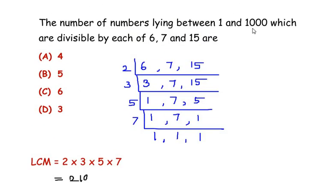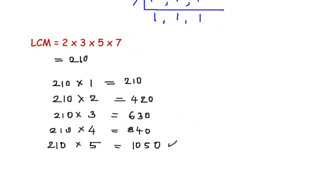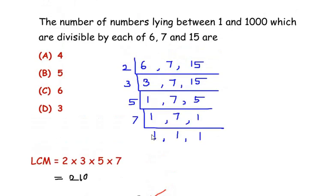One thousand fifty exceeds the given value of one thousand, so it is not included. The numbers lying between one and one thousand which are divisible by six, seven, and fifteen are: two hundred ten, four hundred twenty, six hundred thirty, and eight hundred forty. One thousand fifty is not in the list, so we have a total of four numbers.